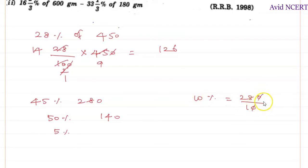Zero zero gets cancelled, or when you are dividing by 10, just keep a decimal point before one digit, which is 28.0 or just 28. Then you are asking for 5%, which is half of 10%. So half of 28 is 14.